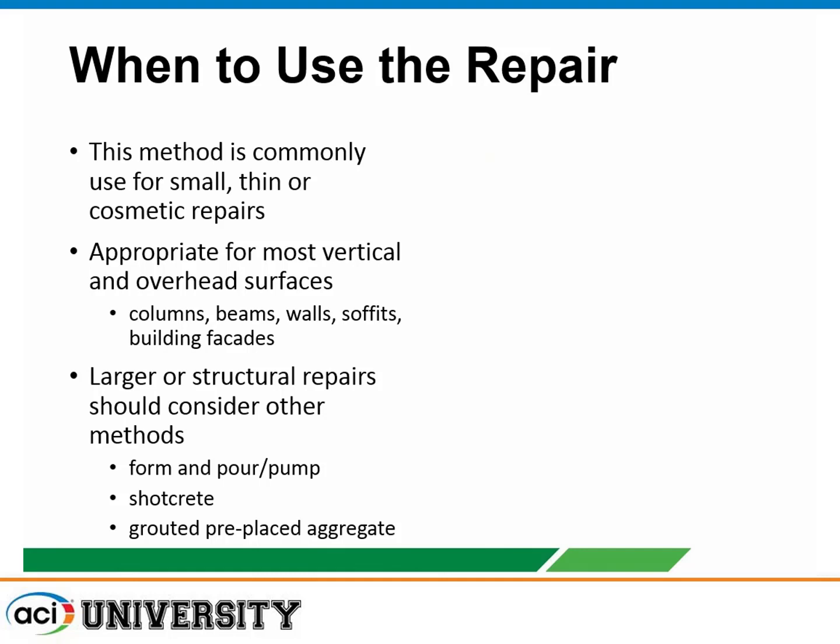This method is commonly used for smaller repairs using hand application with trowels — a manual process. Materials are made specifically for this type of repair and are generally used for smaller, thin, or cosmetic repairs on vertical and overhead surfaces such as columns, beams, walls, and building facades. For larger, more structural repairs, you may want to look at other types of repair application procedures such as form and pump, pour applications, shotcrete-type repairs, or graded preplaced aggregate — which you'll learn more about in other presentations.